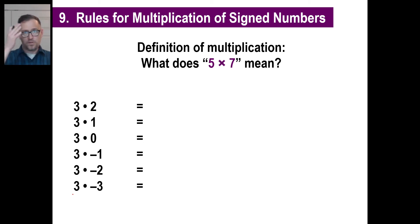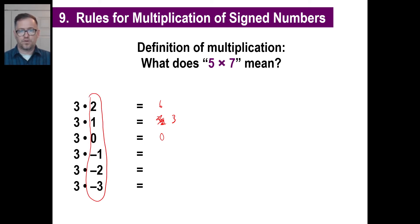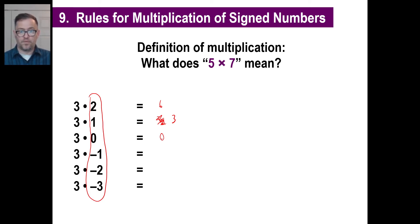Let's do this together. 3 times 2 is 6. 3 times 1 is 3. 3 times 0 is 0. What's happening to the number on the left each time? It's going down by 1. What's happening to the answer on the right? It's going down by 3. So even if you didn't know what 3 times negative 1 was, you could logically follow the pattern — it's down 3 from 0, so that's negative 3. And down 3 again is negative 6. And then negative 9, and so on.